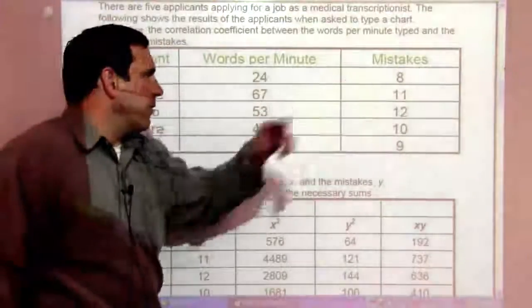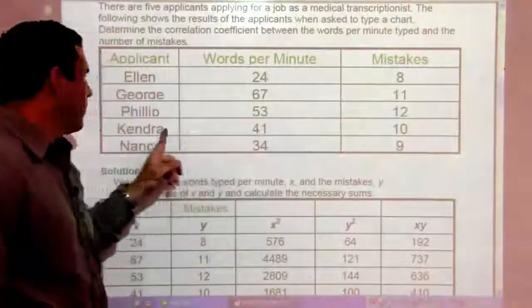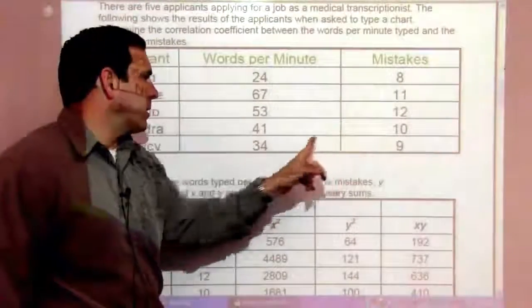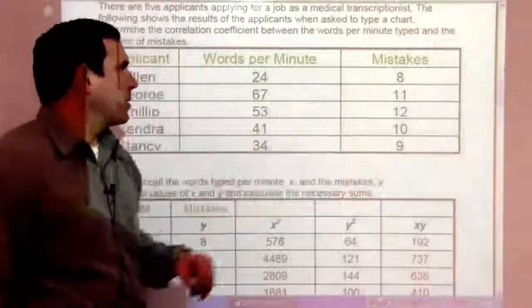George, 67 with 11 mistakes. Phillip, 53 with 12 mistakes. Kendra, 41 with 10 mistakes. And Nancy, 34 with 9 mistakes.